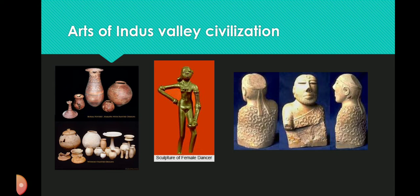Pottery: The Indus Valley pottery mainly consisted of wheel-made wares; very few are found to be handmade. Plain pottery is more common than painted wares and is generally made of red clay. The black painted ware has a fine coating of red slip on which geometric and animal designs are executed in glossy black paint. Polychrome pottery is rare and mainly comprises small vases decorated with geometric patterns in red, black and green. Perforated pottery includes a large hole at the bottom and small holes all over the wall.